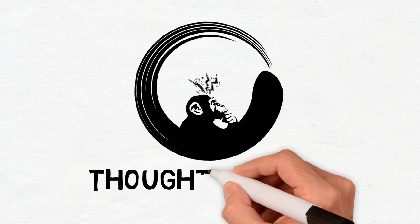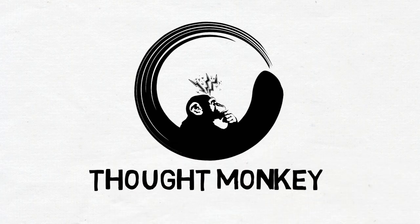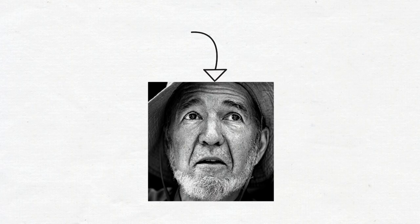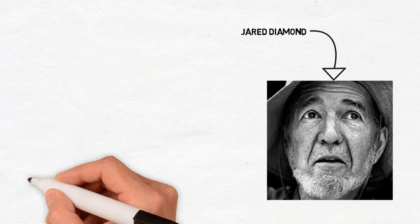Thoughtmonkey here. This episode is all about outlining a theory that tries to explain why Europeans have been so dominant over the past 500 years. In 1997, a man named Jared Diamond published a book called Guns, Germs, and Steel.